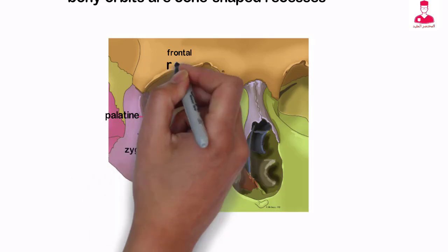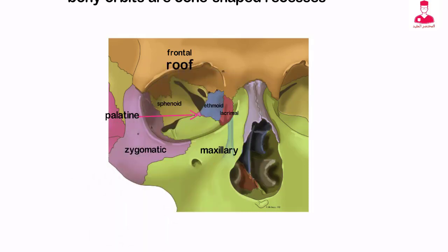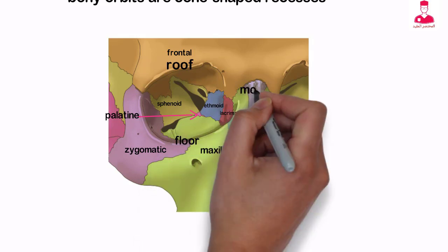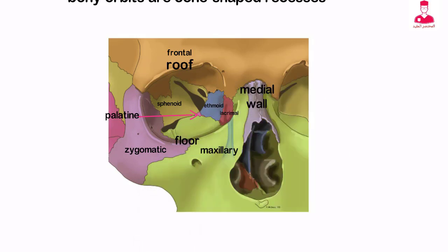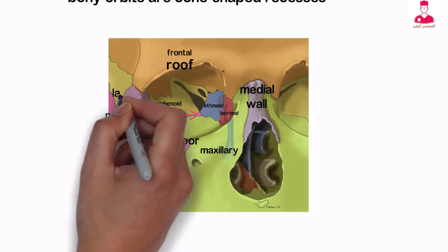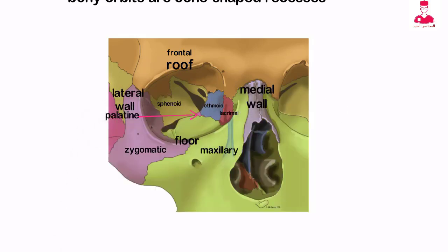Each orbit presents a roof, floor, medial wall, lateral wall, and an apex.